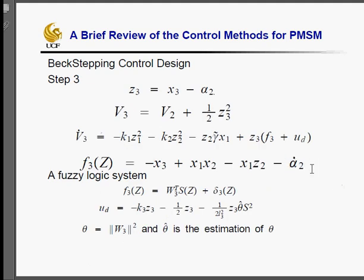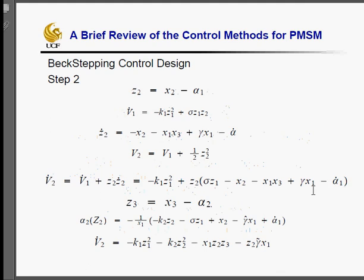We can see alpha2 dot is equal to this part. When we take the derivative, it will be extremely complex. So we can't deal with it with traditional control.